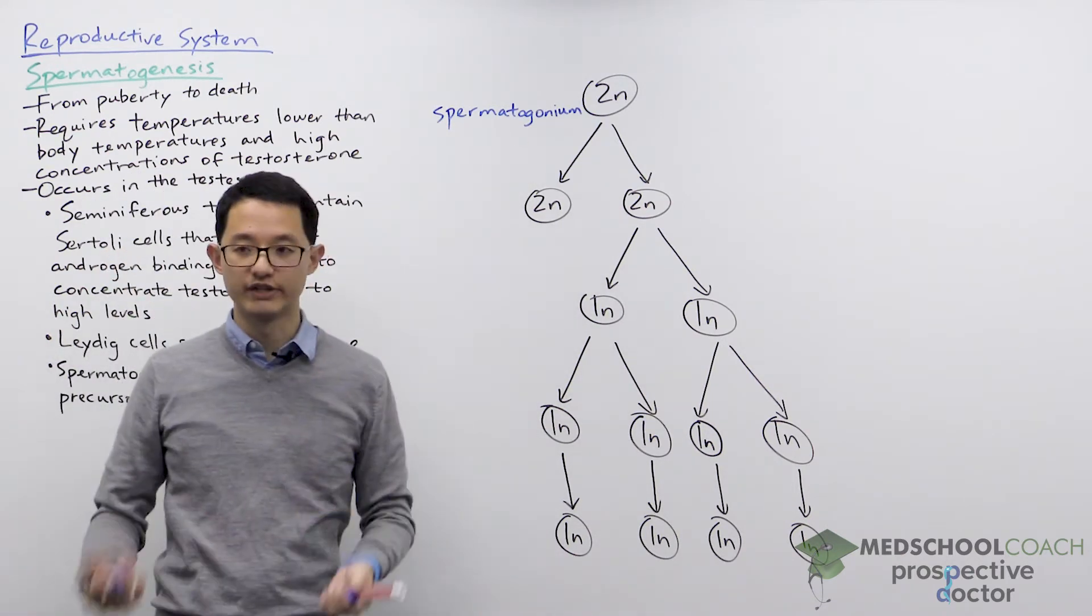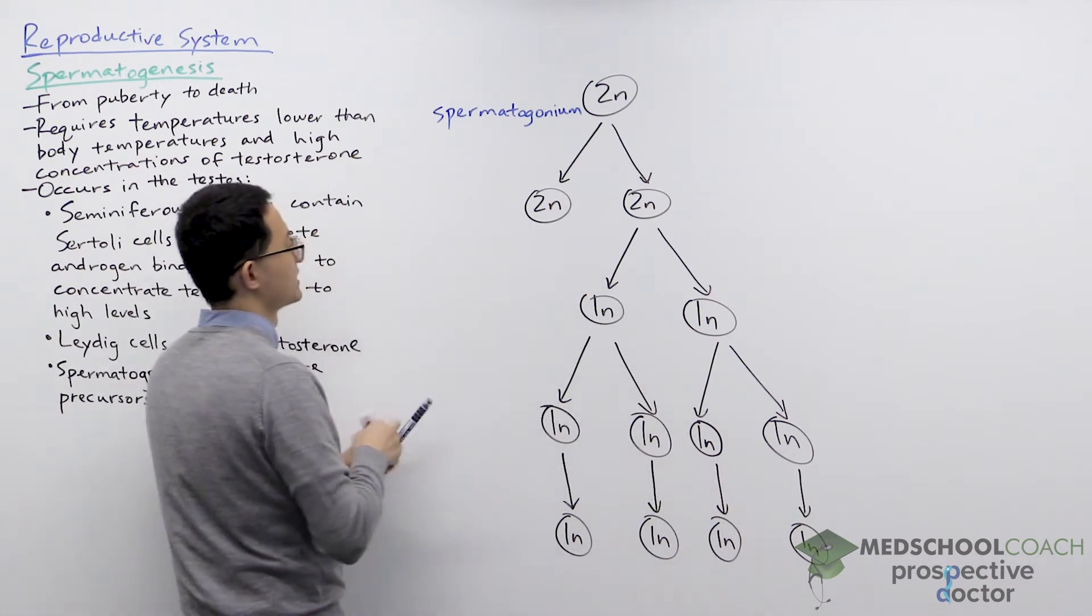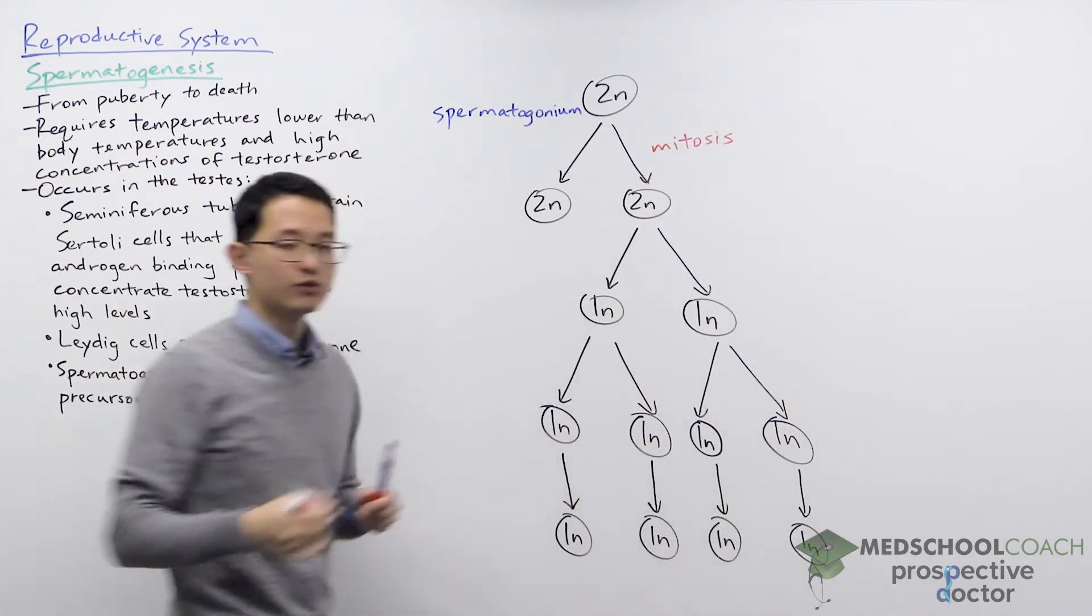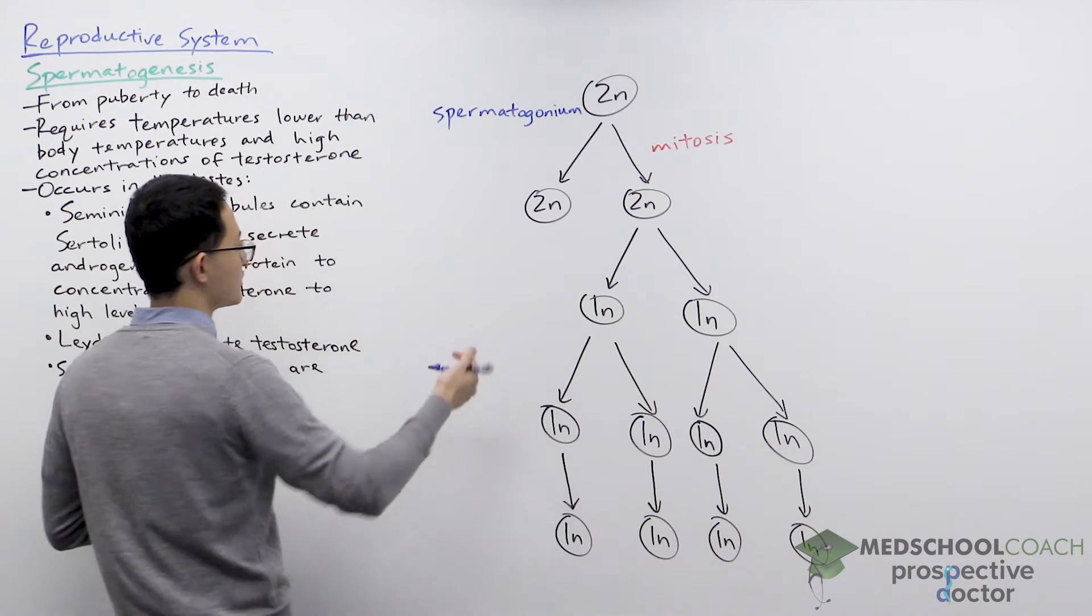So if you have a single spermatogonium it's going to undergo mitosis. And when it undergoes mitosis it's going to form two identical cells. Now these cells are going to produce different results.